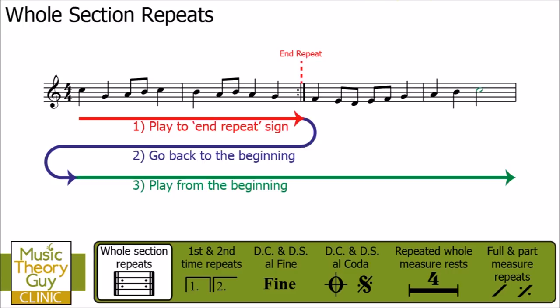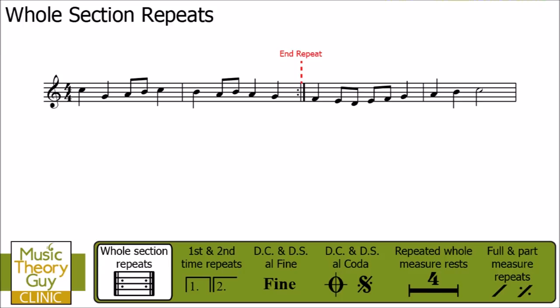So we've covered some very simple whole section repeat examples. What you've always got to do with any piece of music is keep your eyes out for any start or end repeat signs. If there is an end repeat sign, there may or may not be a start repeat sign, but if there is a start repeat sign, there definitely will be an end repeat sign somewhere. You've always got to be aware of them and work out exactly where they're repeating from and to.